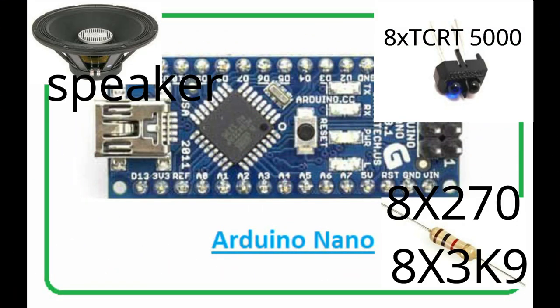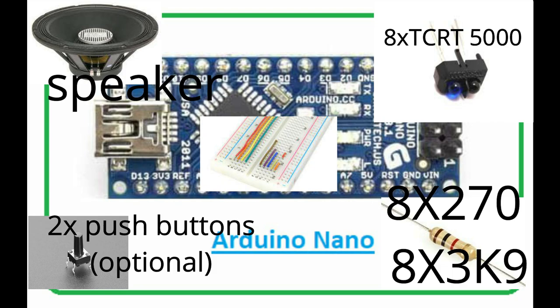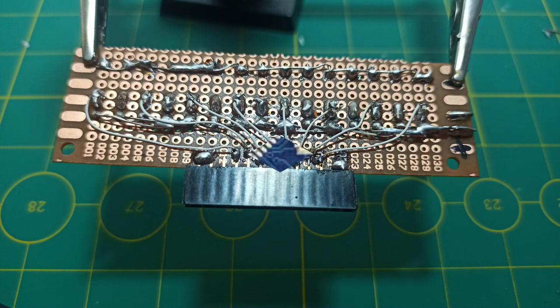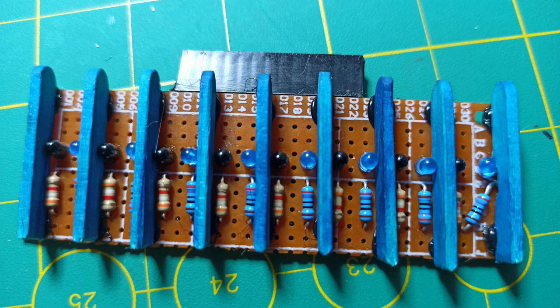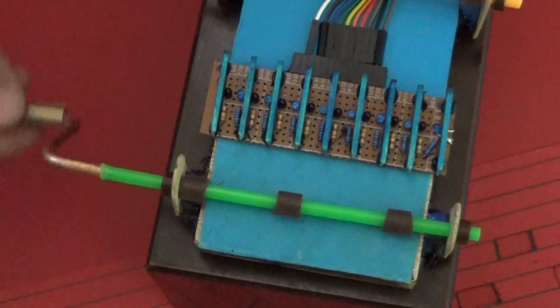The necessary materials are easy to procure: an Arduino Nano board, 8 TCRT 5000 infrared sensors, an 8 to 16 ohm speaker, some resistors, a test board and some wires.